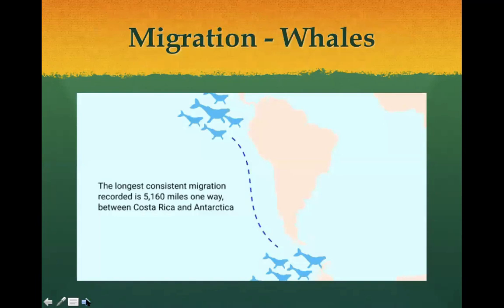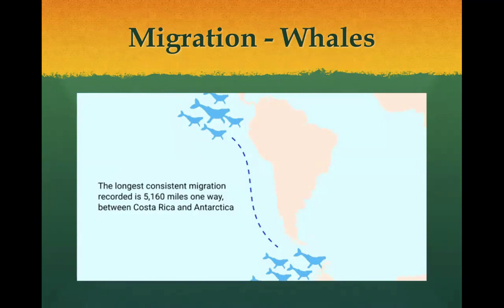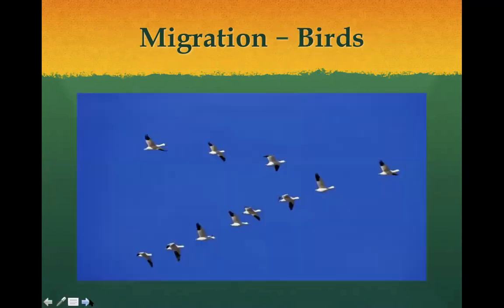Another type of adaptation having to do with behavior is migration. Many animals across the world migrate — they move from one place to another to help with their survival. Whales migrate from colder climates in the Antarctic, where they feed, up toward the equator where warm oceans are perfect for having their babies. They migrate back and forth throughout the year. Birds are another example of migration — going south for the winter. They migrate from colder places to warmer places to survive, then head back.